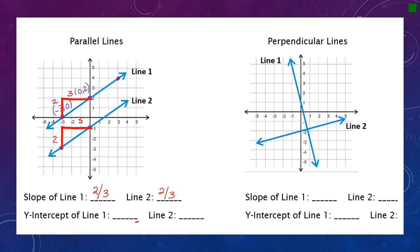You'll notice that parallel lines will always have the same slopes. For the y-intercepts, we're looking at where these lines cross the y-axis, and our answer needs to be an ordered pair. For line one, it crosses at the point zero, two — which we actually used for our slope calculation.